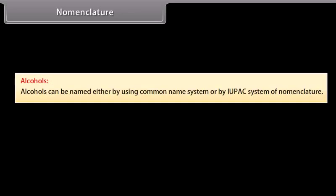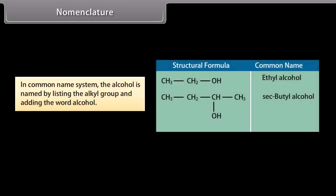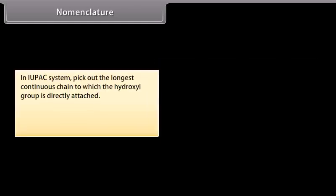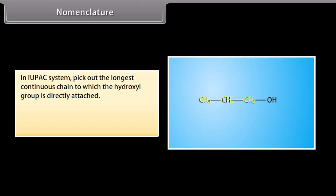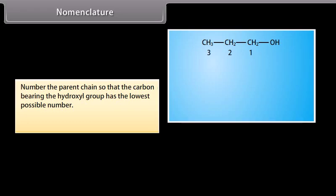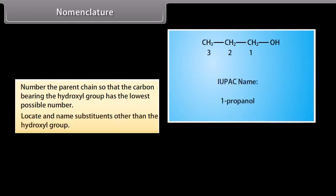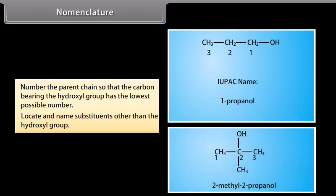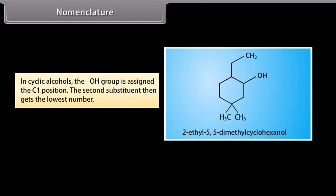Alcohols can be named either by using the common name system or by the IUPAC system of nomenclature. In the common name system, the alcohol is named by listing the alkyl group and adding the word alcohol. In the IUPAC system, pick out the longest continuous chain to which the hydroxyl group is directly attached. The parent name comes from the alkane name for the same chain length; drop the -e ending and add -ol. Number the parent chain so that the carbon bearing the hydroxyl group has the lowest possible number. Locate and name substituents other than the hydroxyl group. For example, 2-methyl-2-propanol. In cyclic alcohols, the hydroxyl group is assigned the C1 position, and the second substituent gets the lowest number, for example, 2-ethyl-5,5-dimethylcyclohexanol.